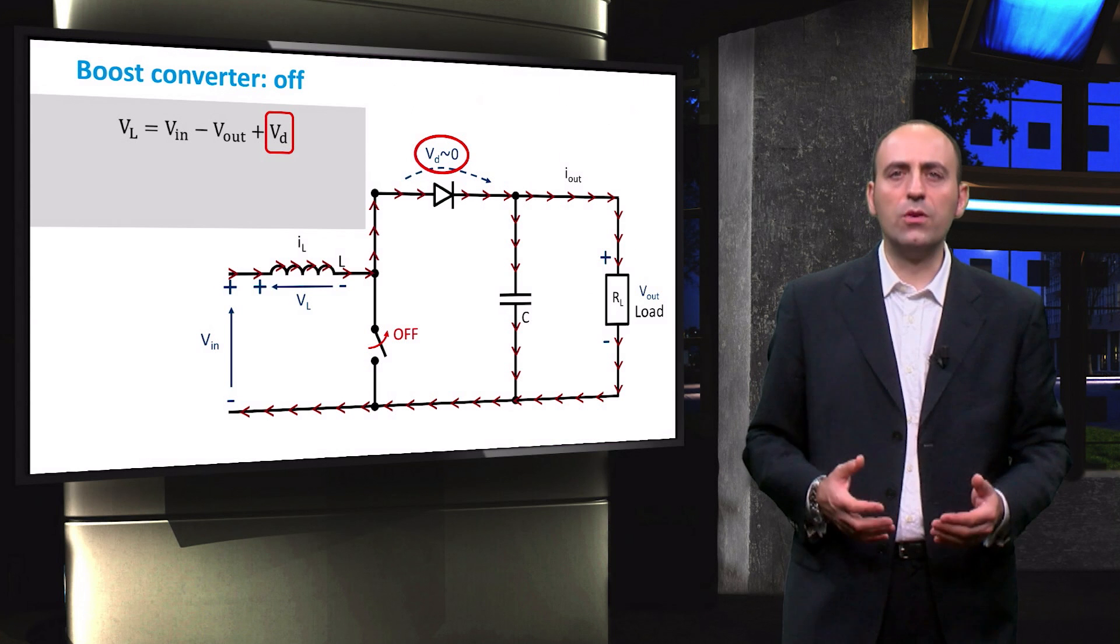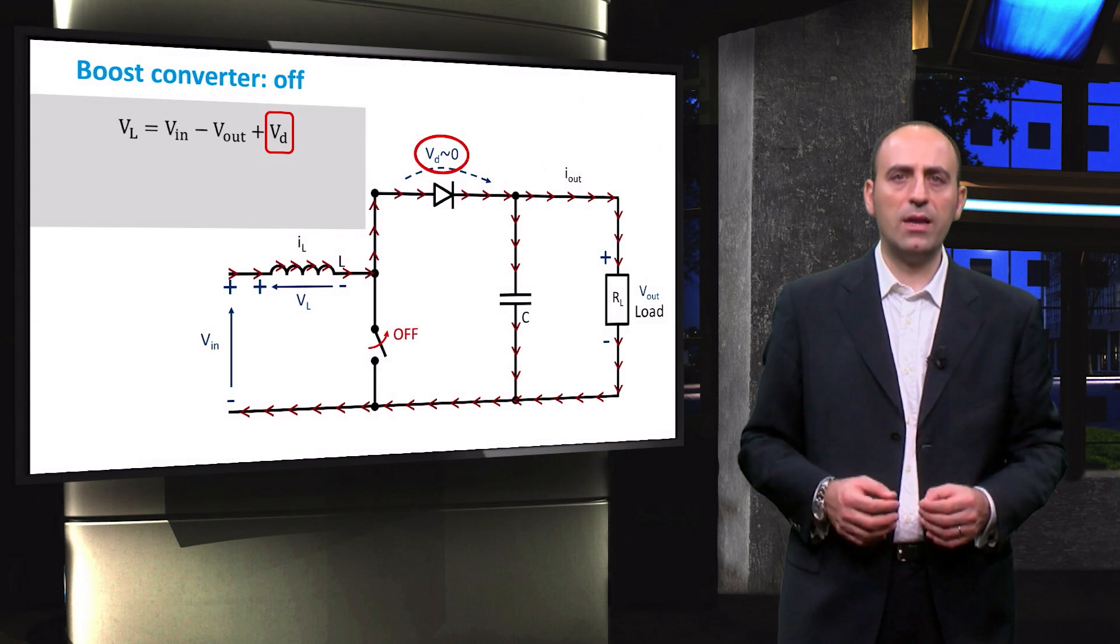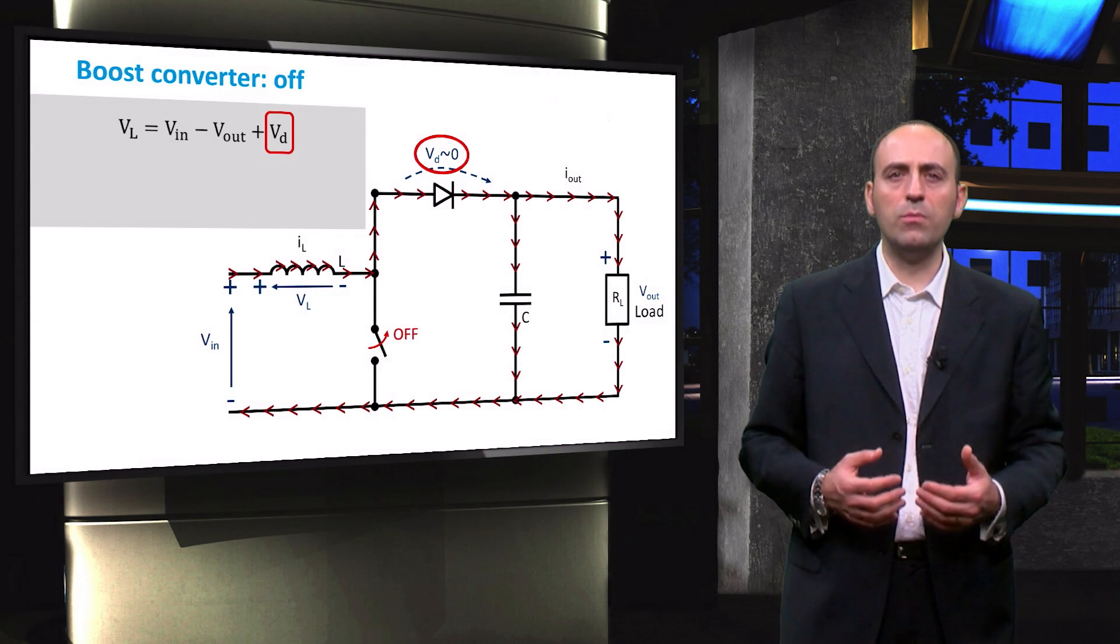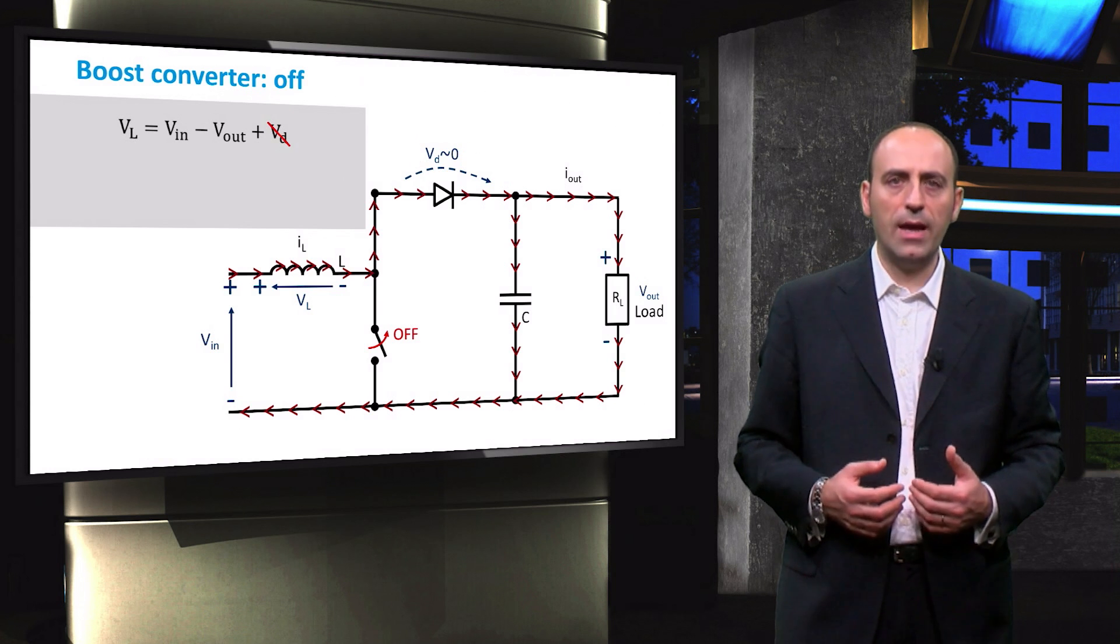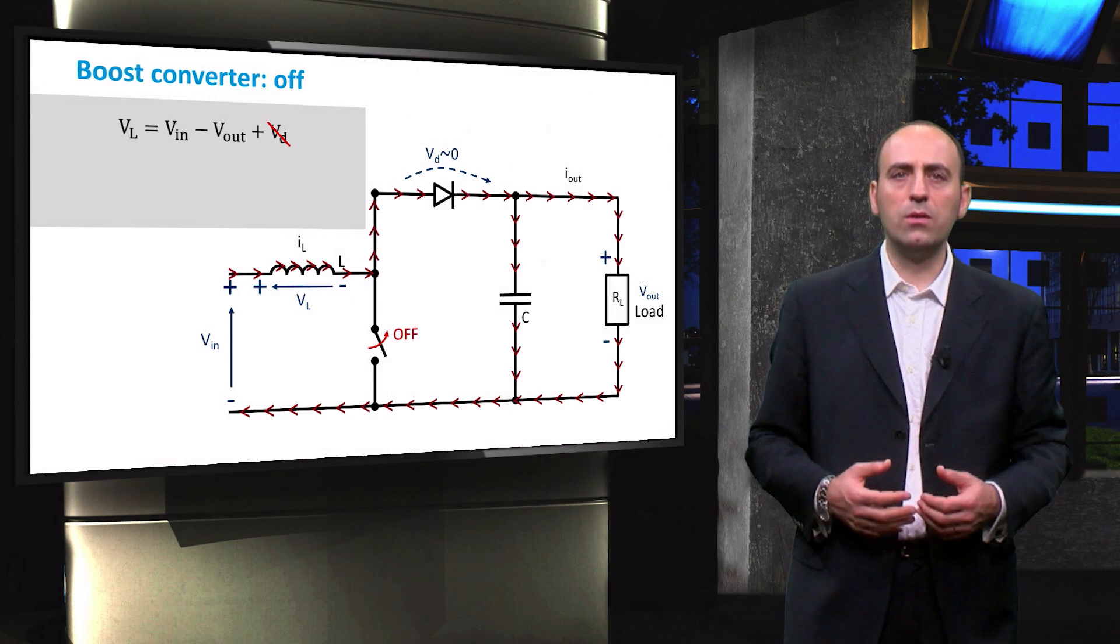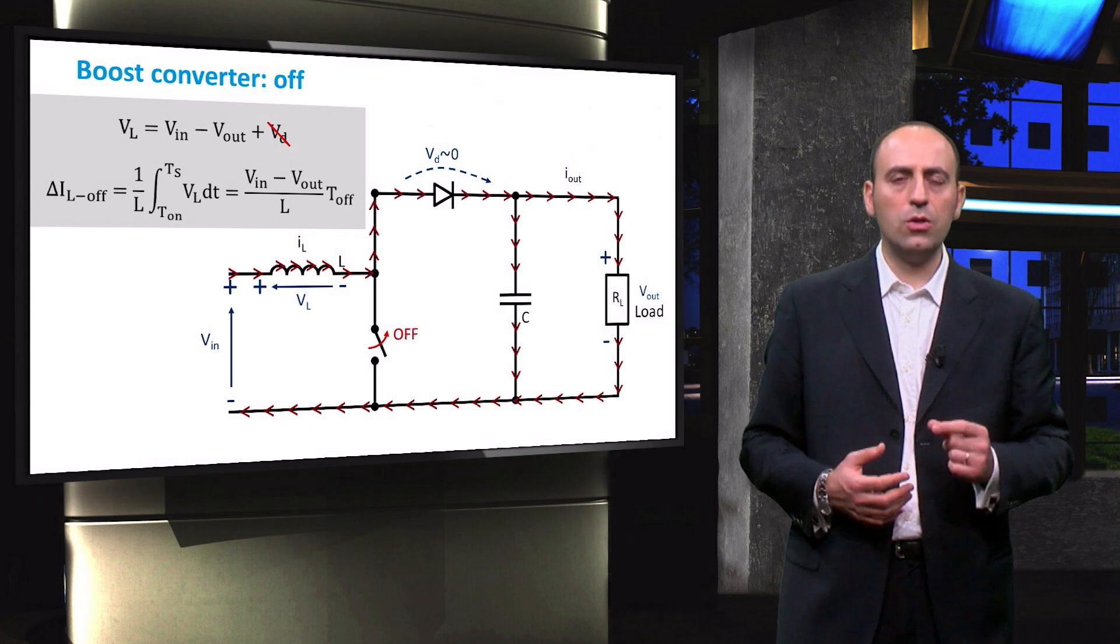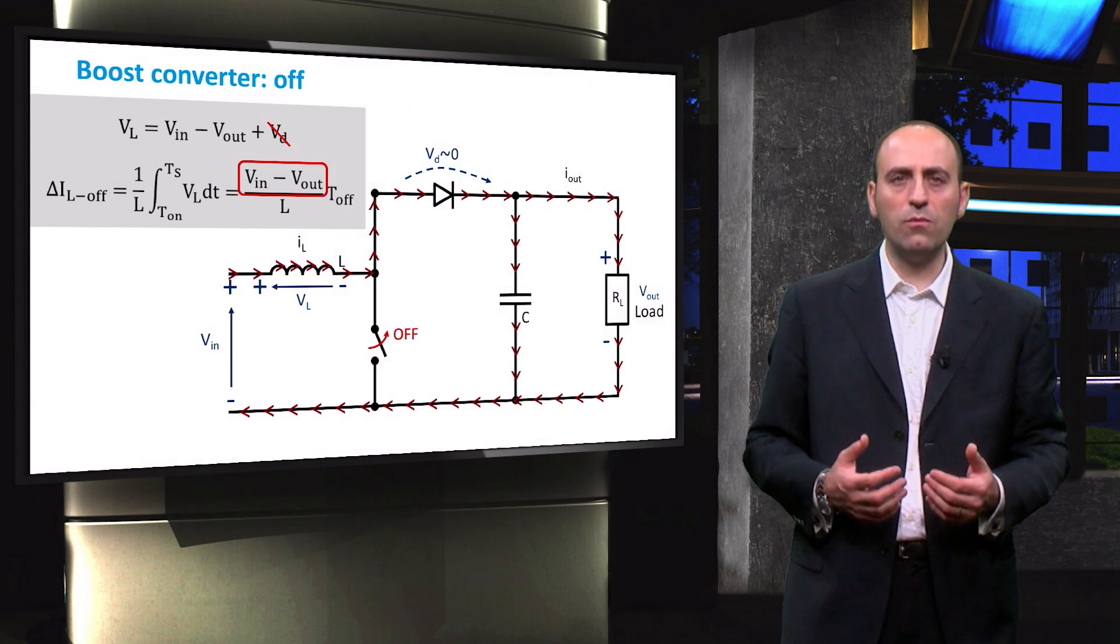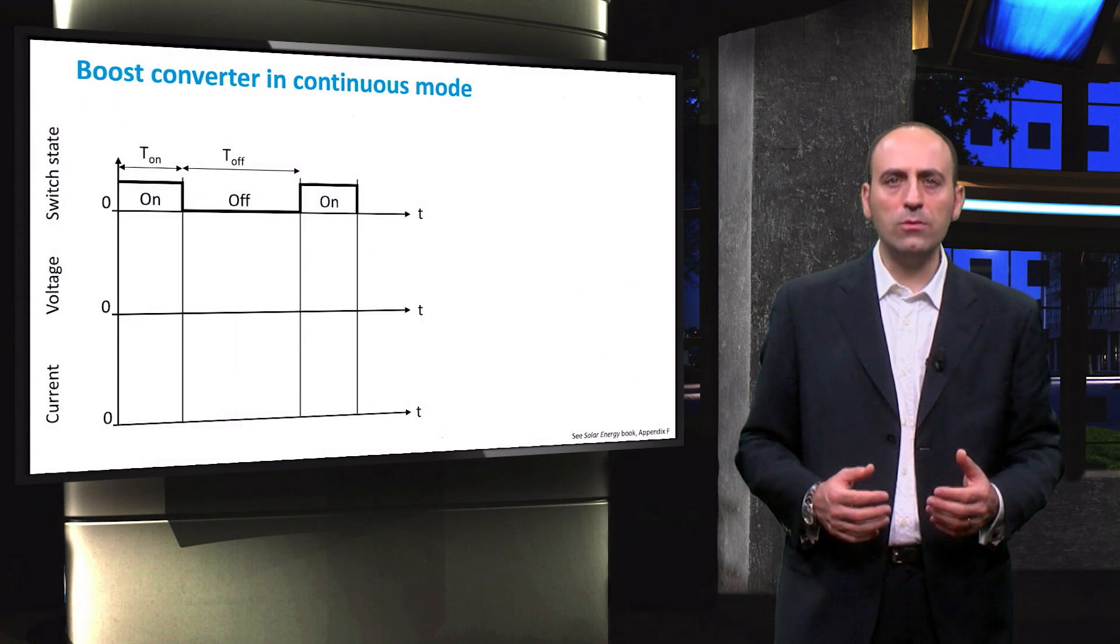However, like for the buck converter, the voltage across the diode requires a very small bias to start conducting, and is usually negligible because it's in the range of 0.7 volts or less. Hence, only Vin minus Vout remains, with which we can express the variation in current. Notice that it decreases during OFF mode. In fact, the numerator is negative because the output voltage is higher than the input voltage.